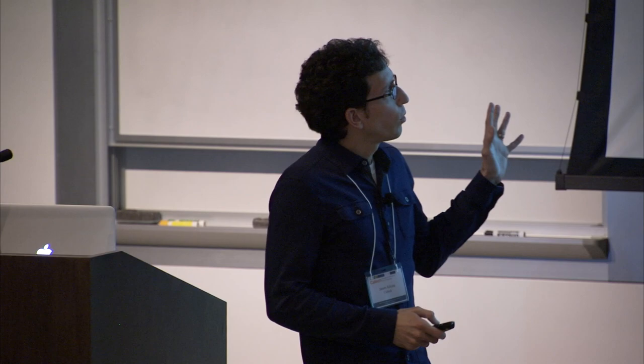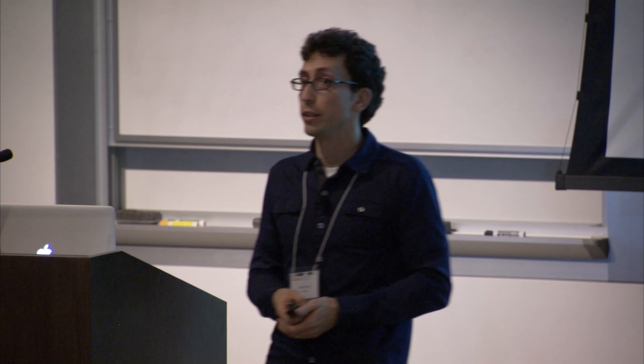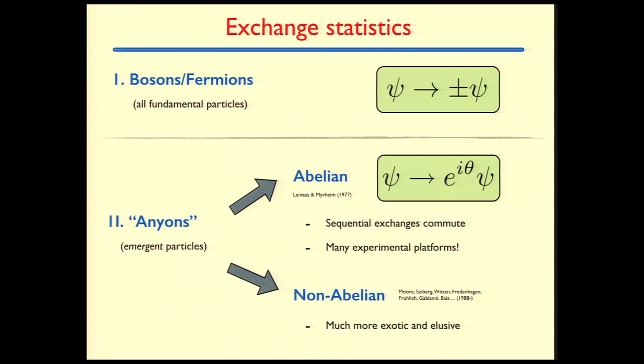Now, as I'll say a little bit more later on, we know nowadays of many experimental platforms that almost certainly give us Abelian anyons. In fact, right here at Caltech, in Jim Eisenstein's lab, he's routinely making samples that almost certainly support these kinds of emergent particles. My talk today is all about the second flavor, so-called non-Abelian anyons, which are much more exotic and elusive objects compared to their Abelian cousins.